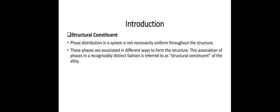Phase distribution in a system is not necessarily uniform throughout the structure. These phases are associated in different ways to form the structure. This association of phases in recognizable distinct fashion is referred to as structural constituent of the alloy.